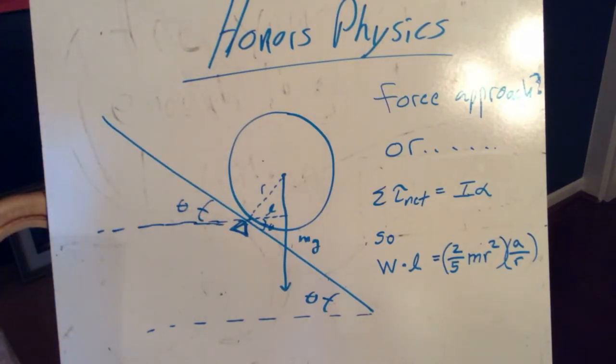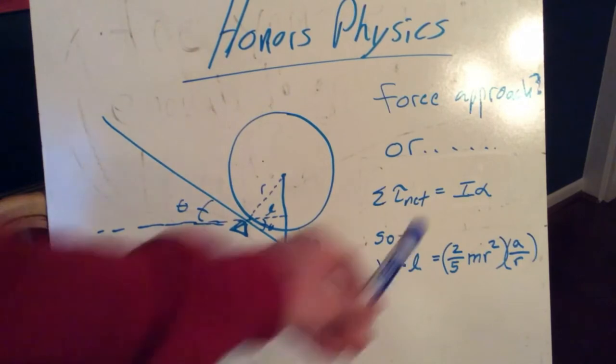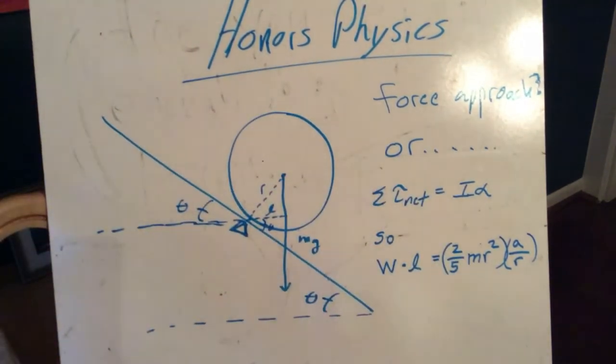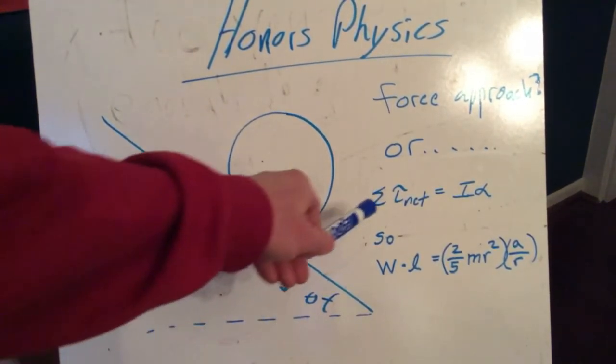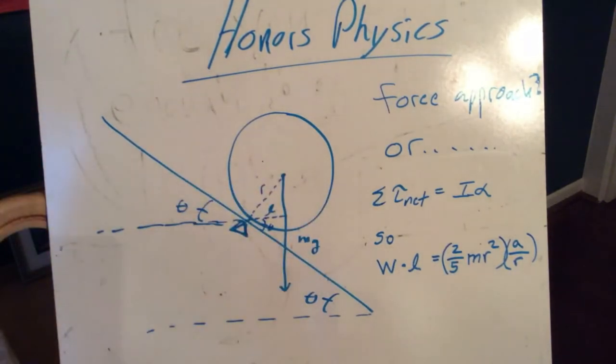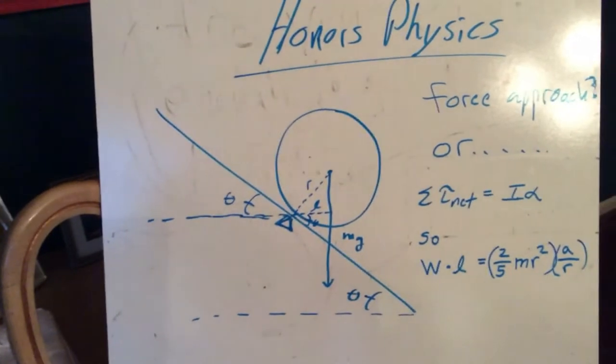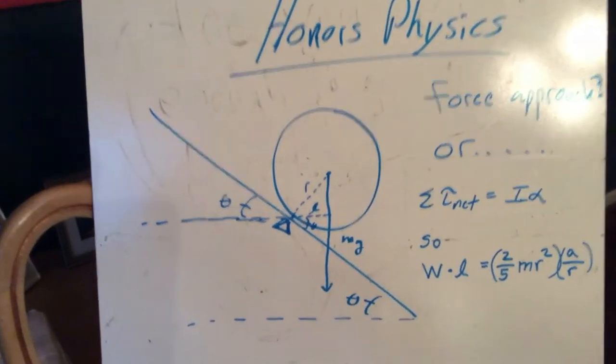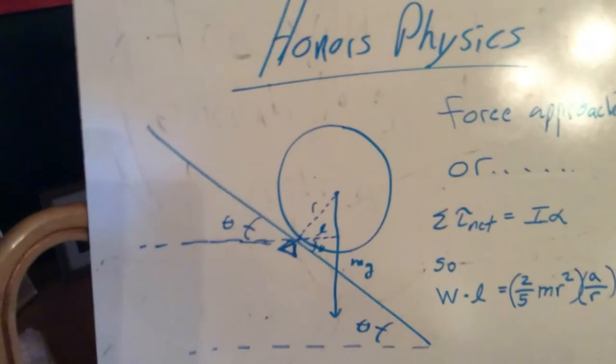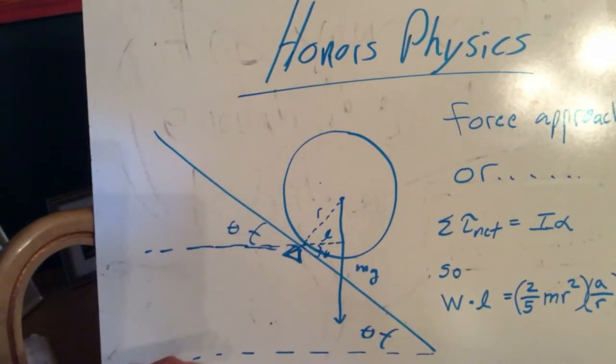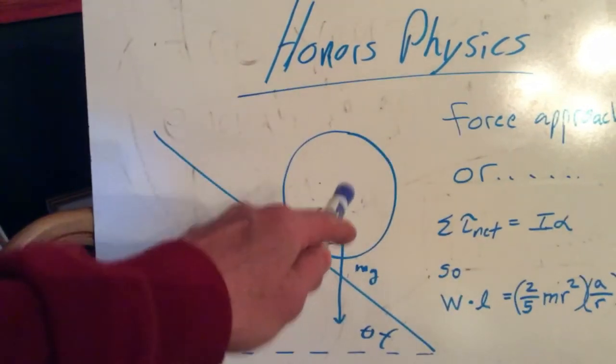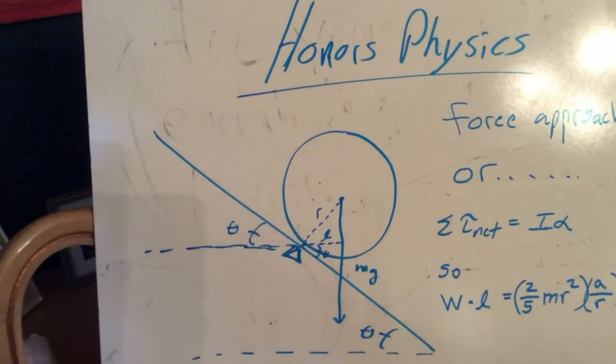So, what we're going to do here is we're going to take the net torque on the ball, and we're going to make that equal to I times alpha. Because I times net acceleration angularly will be because of the torque. I have here on my left a diagram, and that diagram, I don't know if you can see this here. I'll try to move it a little closer. You've got the angle of the incline. You've got the ball going down there, and a ball has a weight. The weight goes right down to the middle.